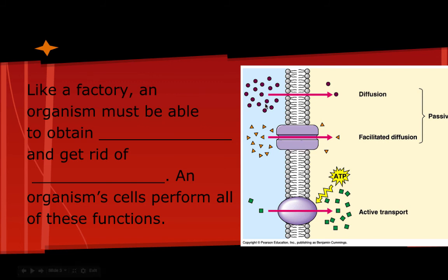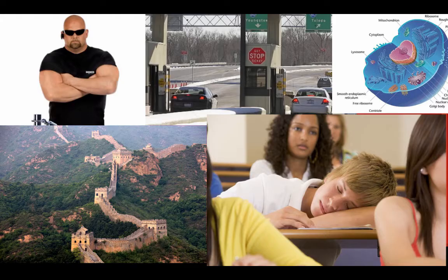The process of obtaining nutrients across the cell membrane is what we're going to be discussing. Pause the video and think about what these five pictures have in common with each other. We have a club bouncer, the Great Wall of China, turnpike toll booths, a cell, and students. All of these items are what we would call selectively permeable — they decide what comes in and what goes out.